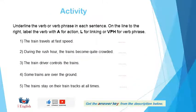Let's do some exercises based on this lesson. Verbs. Here is a question. Underline the verb or verb phrase in each sentence. On the line to the right, label the verb with A for action, L for linking, or VPH for verb phrase. Dear students, always ask yourself what the question asks you to do. You're asked to underline the verb or verb phrase and to label the verb with A for action, L for linking verb, or VPH for verb phrase.